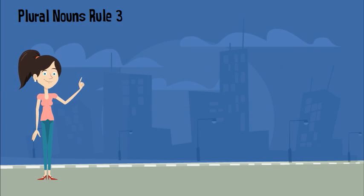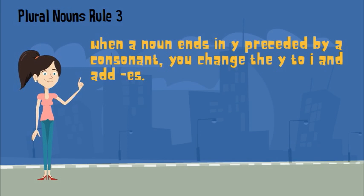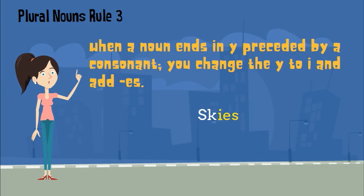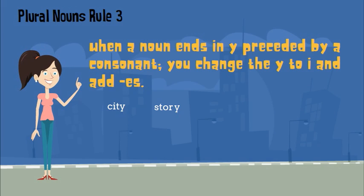Another rule to form the plurals of nouns is applied when a noun ends in Y preceded by a consonant — you change the Y to I and add ES. An example would be the noun sky, ending in Y. There is a consonant letter K before Y, so I can drop the Y and add IES to form the plural noun skies. Here are some other singular nouns that require this rule: city, story, party, county.